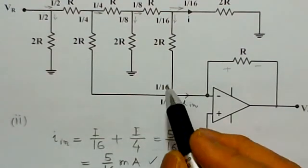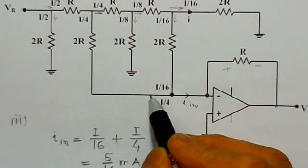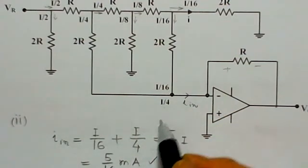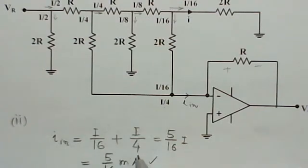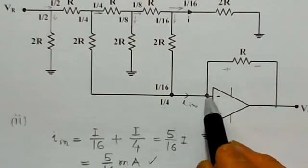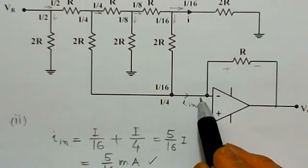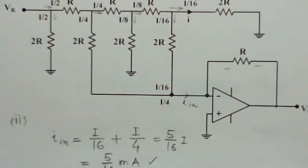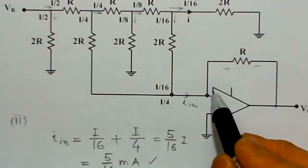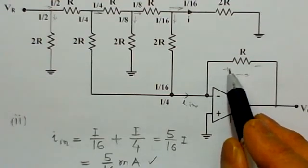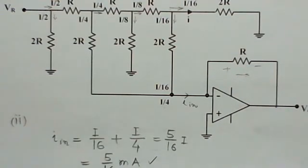For the second part, we determine the output voltage V0. The current entering from one side is I/4, and from the indicated branch is I/16, so the total current flowing into the inverting terminal is I/16 plus I/4, which equals 5I/16. Since the input impedance of the op-amp is very high, all of this current flows through the feedback resistor. The total current is 5 by 16 milliamperes.